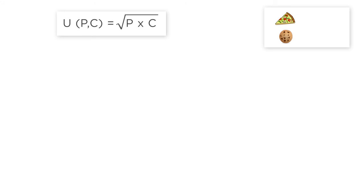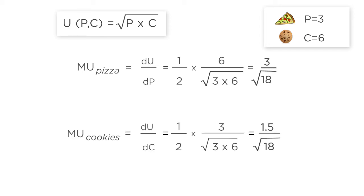When p equals 3 and c equals 6, the marginal utility of pizza is 3 over the square root of 18. The marginal utility of cookies at this point is 1.5 over the square root of 18.